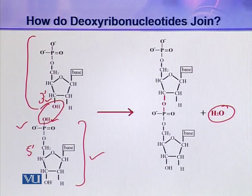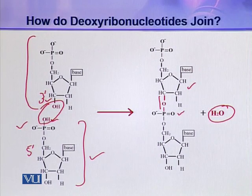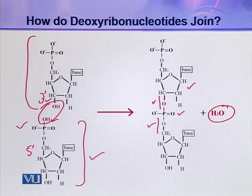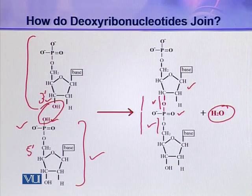This ester linkage is established between the pentose of one nucleotide and the phosphoric acid of the other nucleotide, so one nucleotide is attached to the other via this ester linkage. This linkage is called phosphodiester linkage because there is one ester here and another ester here — two esters and a phosphate group are included in this whole linkage.